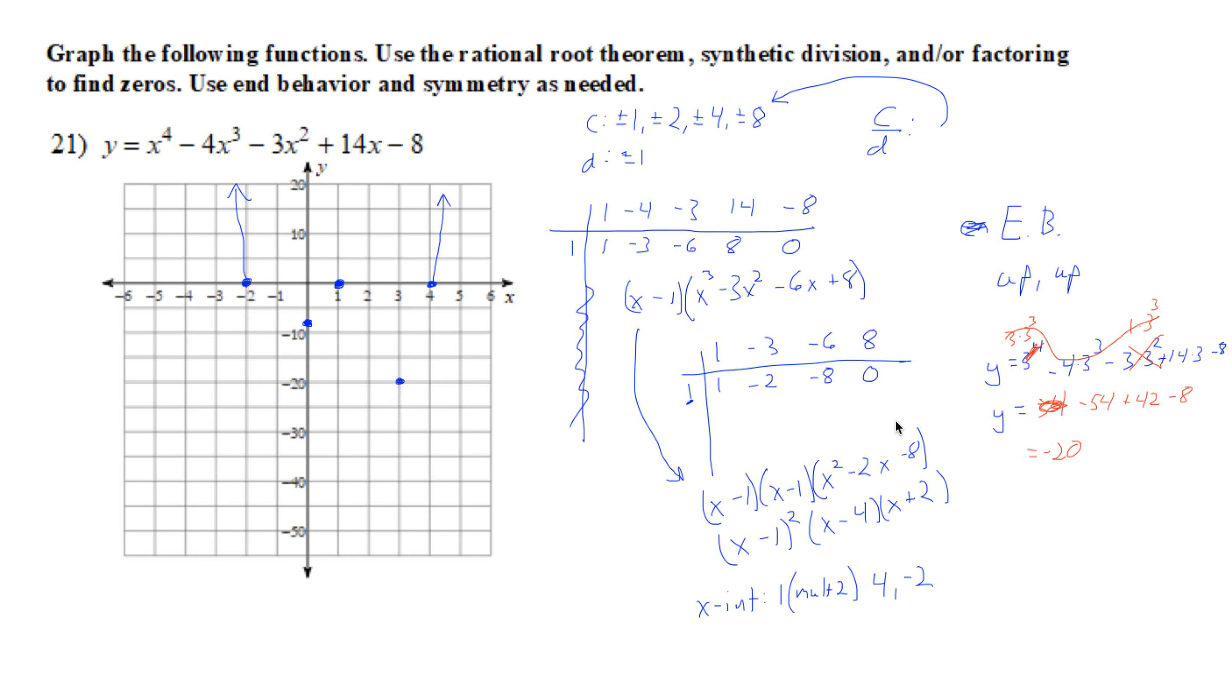Putting in 2: let's put in 2. 2 to the 4th is 16, 2 cubed is 8 times 4 is 32, 2 squared is 4 times 2, this is going to be minus 12 plus 28 minus 8. That's 20. 20 minus 12 is 8. 16 and 8, 16 and 8 is 24, and negative 32 is negative 8. So that goes there.